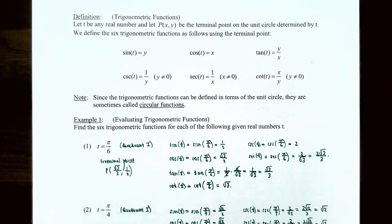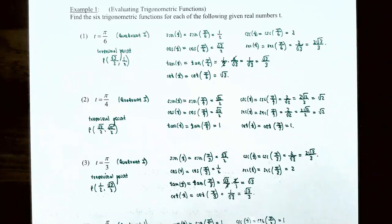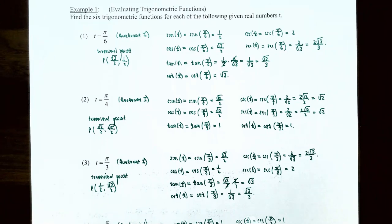Since the six trigonometric functions are defined in terms of the unit circle, they are sometimes called circular functions. In Example 1, we're going to evaluate trigonometric functions based on the special angles in the first quadrant of the unit circle.